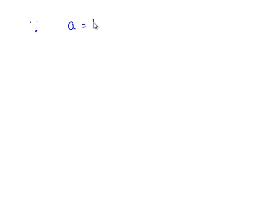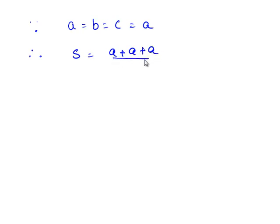Since the given triangle is an equilateral triangle, all the sides are equal. Therefore, A is equal to B is equal to C is equal to A. Therefore, the semi-perimeter S is equal to (A plus A plus A) divided by 2, which is equal to 3A by 2. So let us substitute this in the Heron's formula.